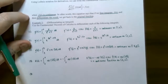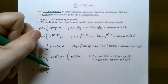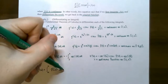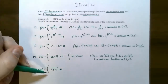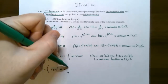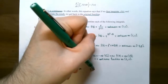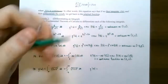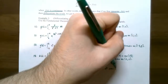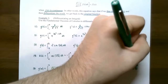Number five: g of w is the definite integral from w to negative two of the square root of nine plus t squared, dt. The variable w is in the lower limit, so reverse the order again: negative of the integral from negative two to w of the square root of nine plus t squared, dt, introducing the negative. Taking the derivative: g prime of w equals the opposite of the square root of nine plus w squared, since f of t is continuous on the closed interval negative two to w.